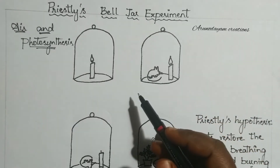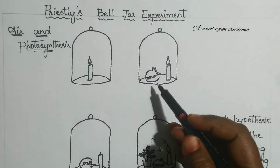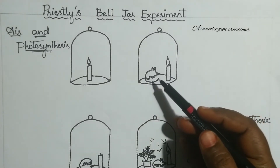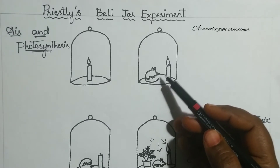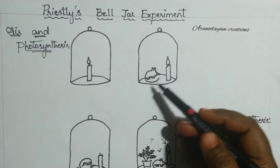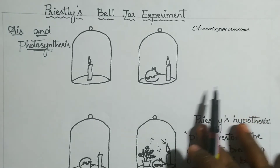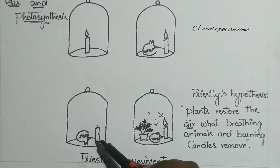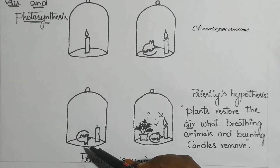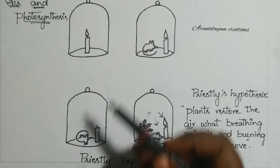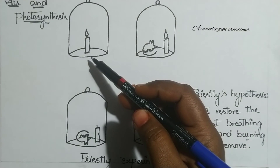In his second observation, he added a burning candle and a mouse to the glass jar. What he observed was that the candle was put off. At the same time, the mouse also suffered from severe suffocation. He first had the candle extinguished, and when he introduced a mouse and a burning candle together, both of them damaged the air.